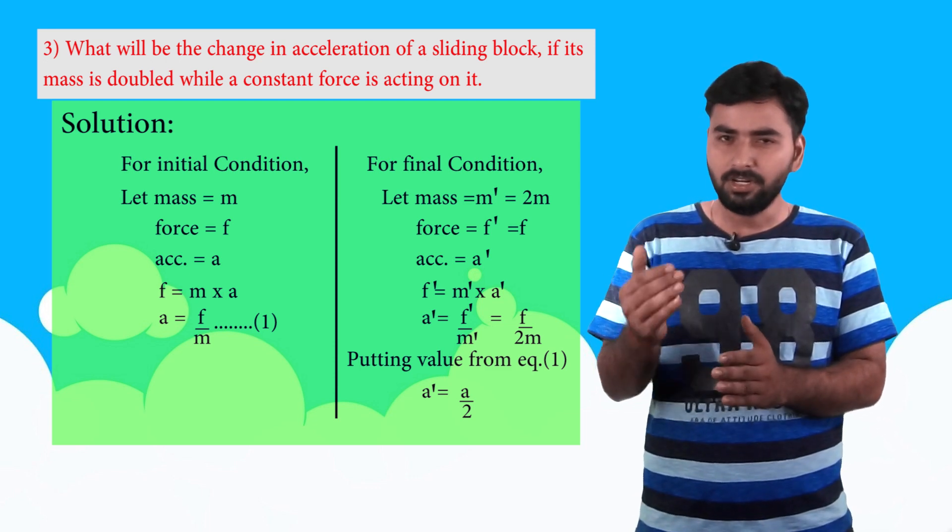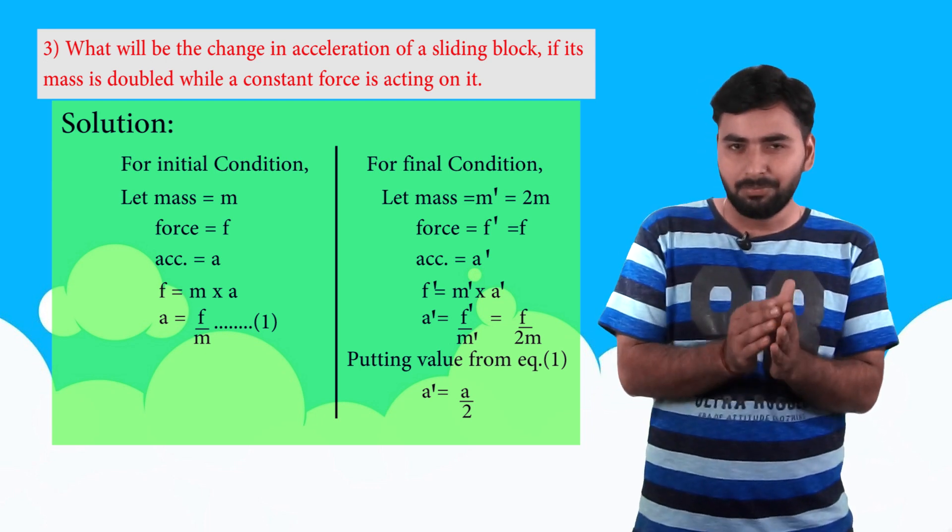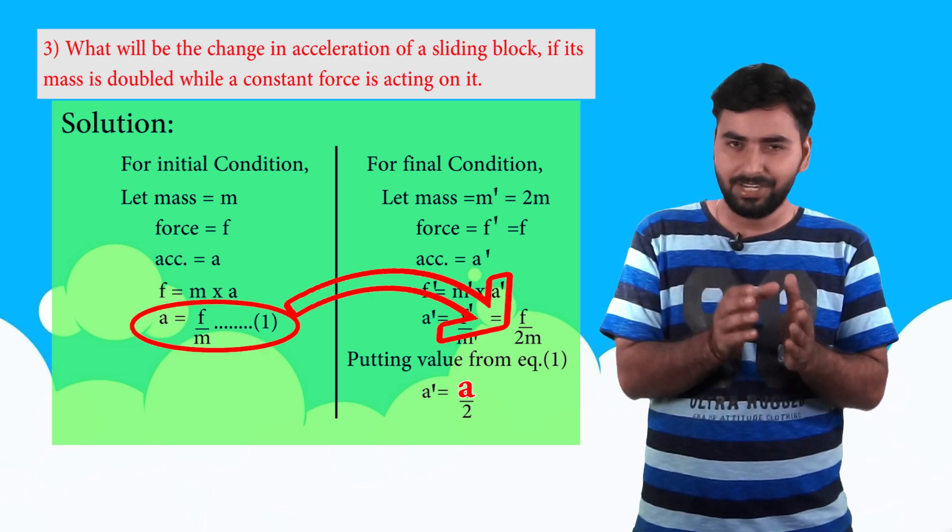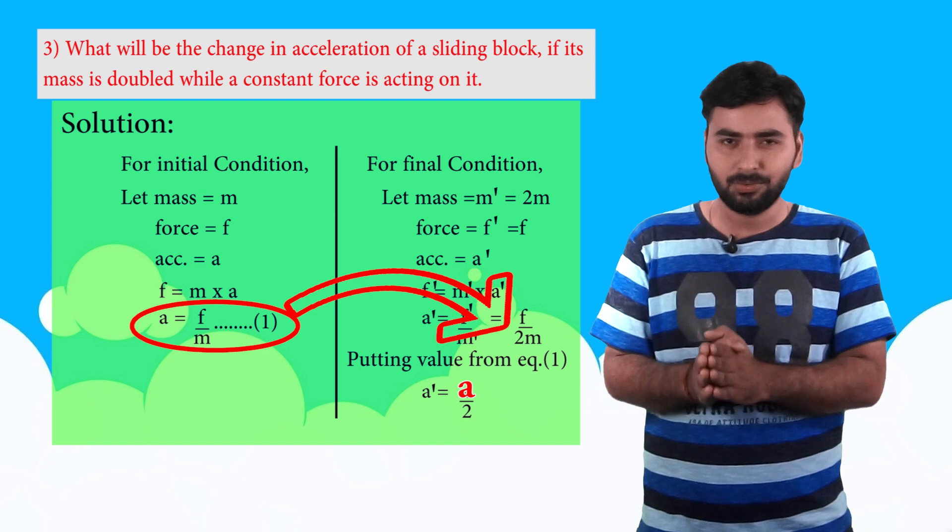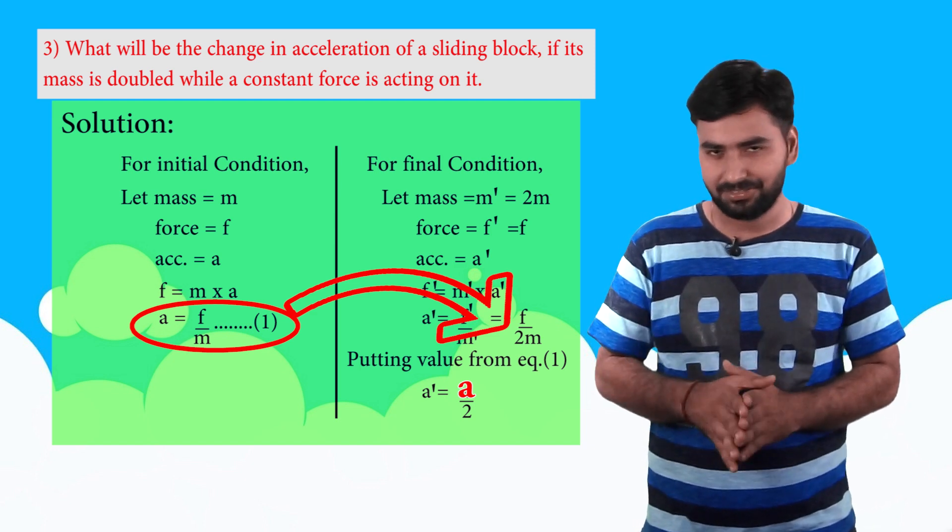So a dash is equal to F dash, but we kept the force same, that is F upon m dash. M dash is two times m, so F upon 2m. Now F upon m from equation one is a, so a dash is equal to a upon 2. That is, the new acceleration will be half of old acceleration.